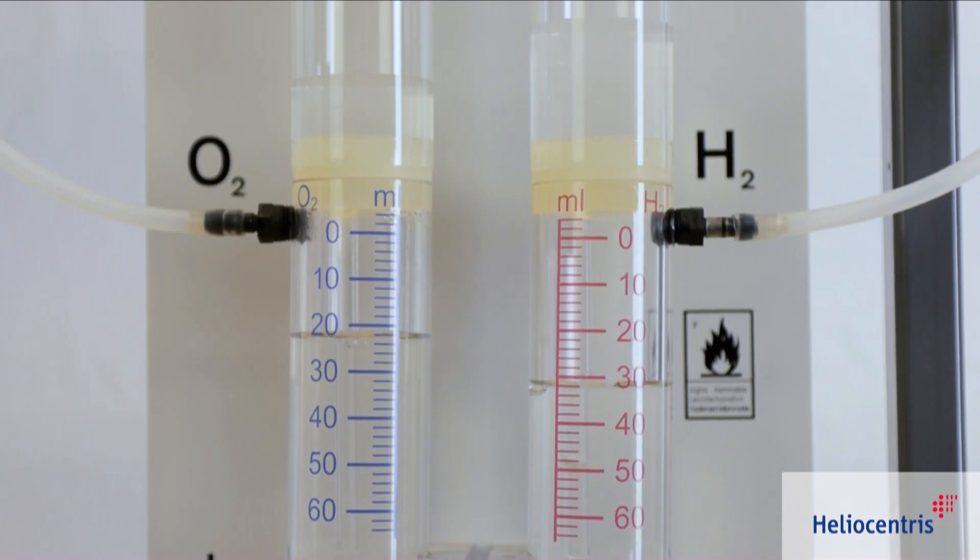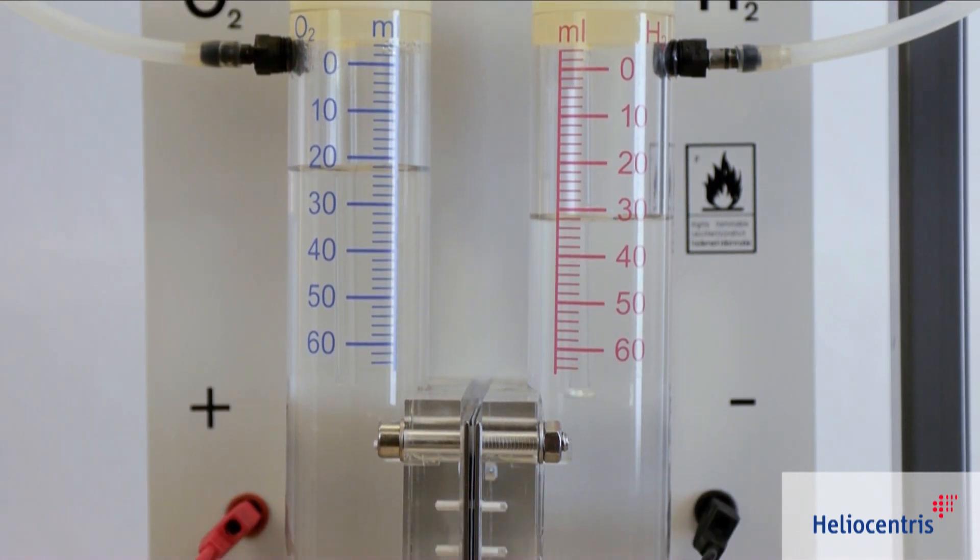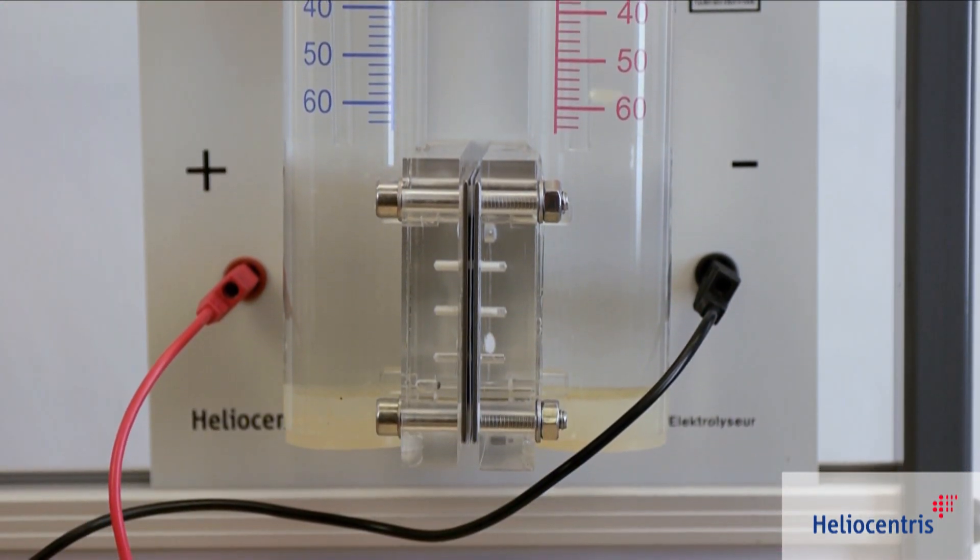The electrolyzer separates distilled water into hydrogen and oxygen with renewable energy from the solar panel.